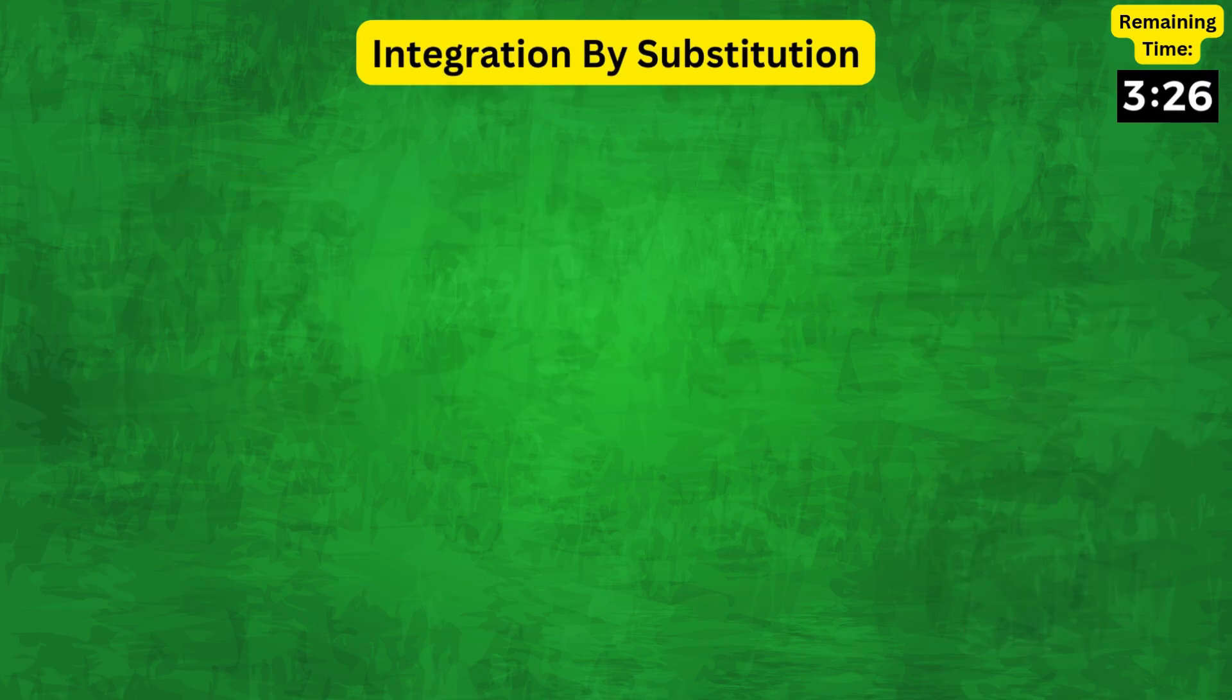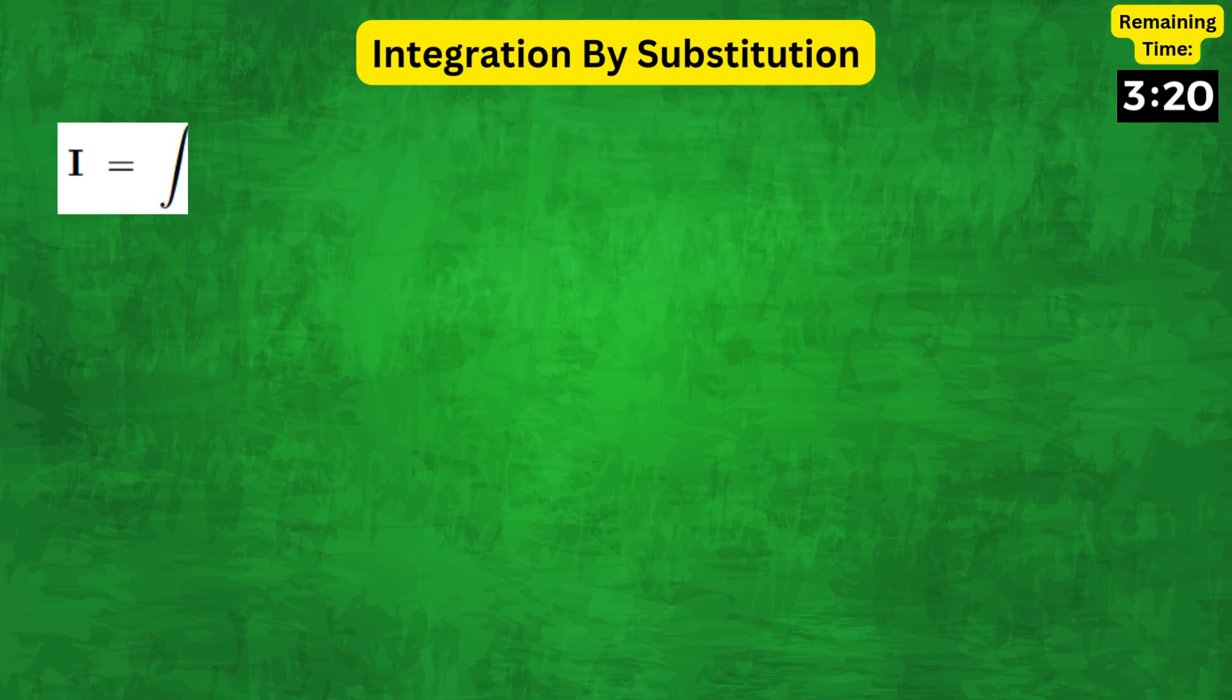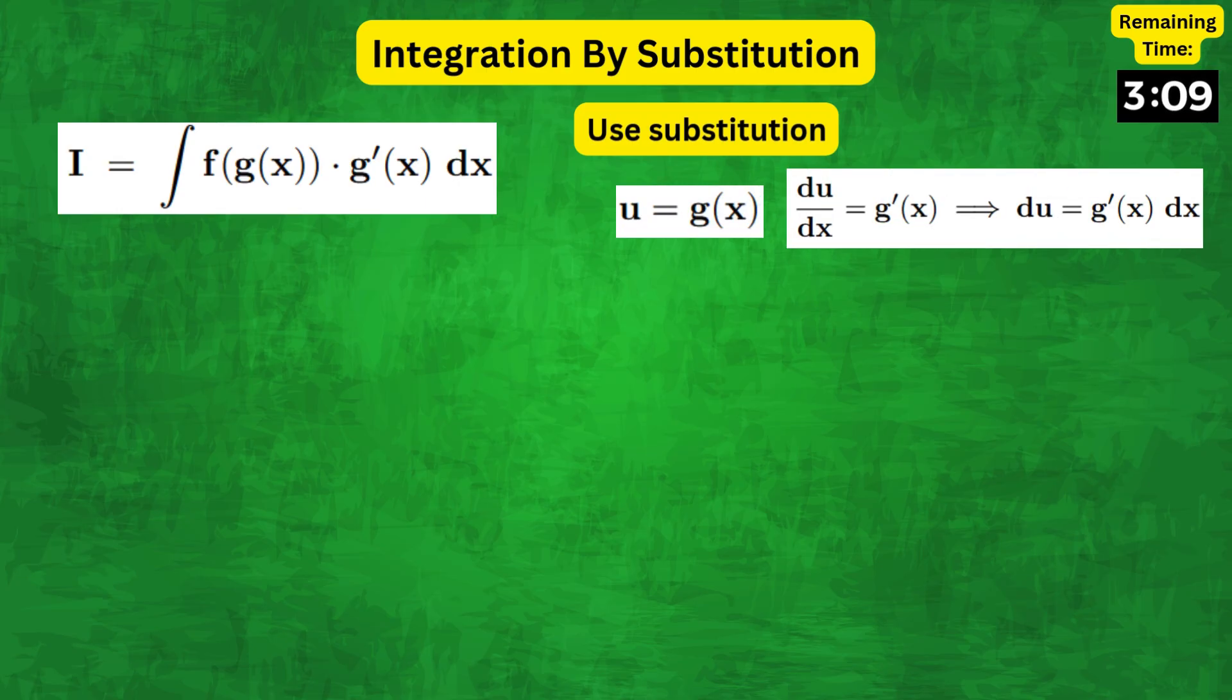We'll kick things off with integration by substitution. This technique is perfect for simplifying complex integrals. Let's consider the integral of the form f(g(x)) times g'(x) dx. In such cases, if we use u equals g(x), then du/dx equals g'(x), and therefore du equals g'(x) dx.